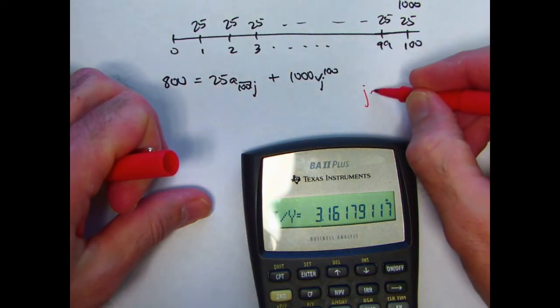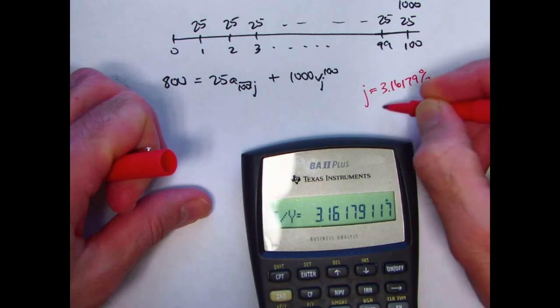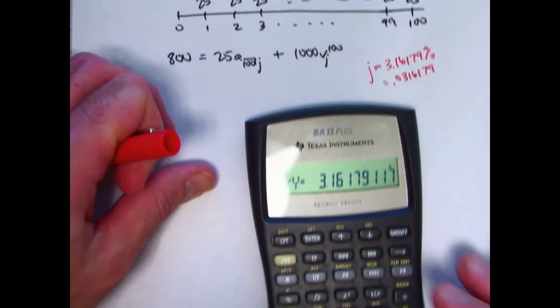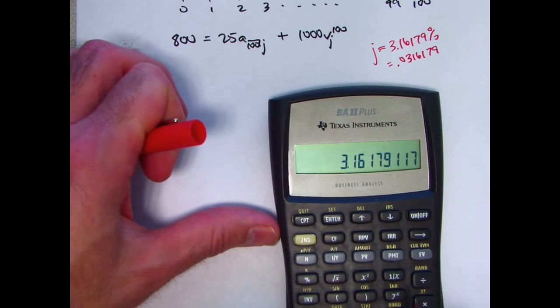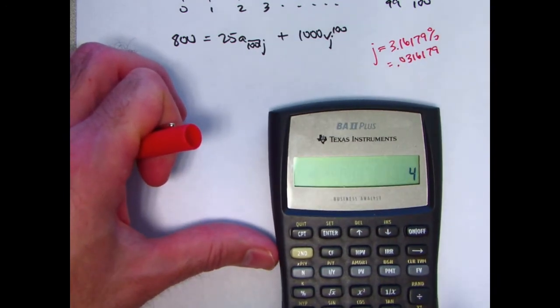J is about 3.16179% or as a decimal 0.0316179. Let's divide that by 100. If you multiply it by 4, that's the final answer.